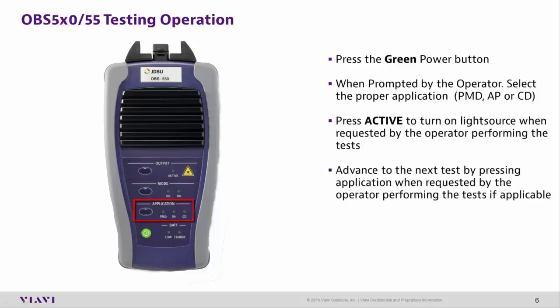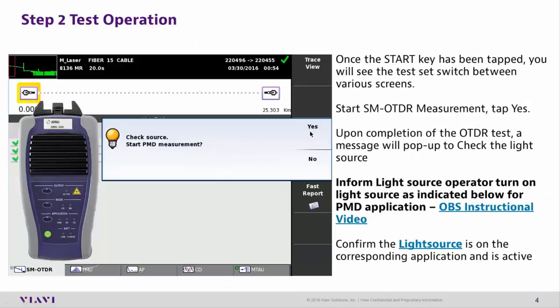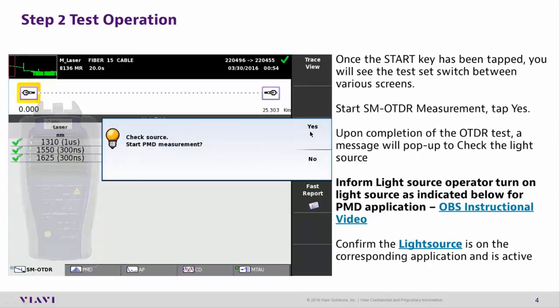Advance to the next test by pressing the application key again when requested by the operator. When the test is complete, press the Active button again to turn the source off. Disconnect and move to the next fiber. Confirm the light source is on the correct application and is activated, then press the Yes button to continue testing.